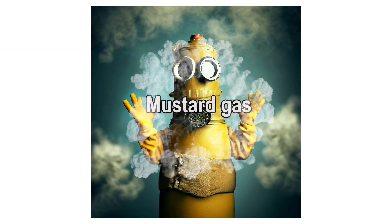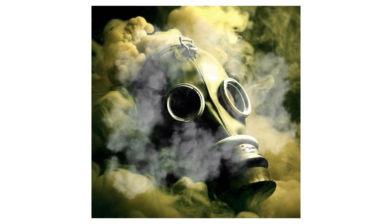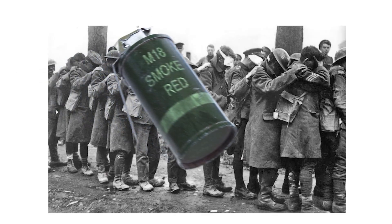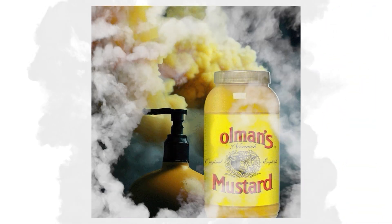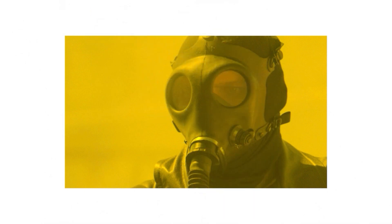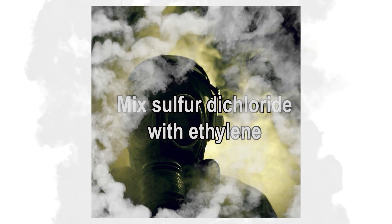Mustard gas is a type of chemical warfare agent. As a chemical weapon, mustard gas was first used in World War I. It was dispersed as an aerosol in a mixture with other chemicals, giving it a yellow-brown color. Mustard gas contains sulfur, and one way to make it is to mix sulfur dichloride with ethylene.